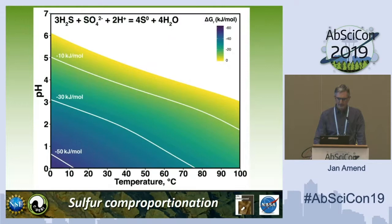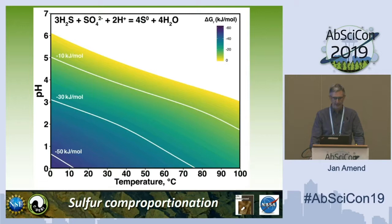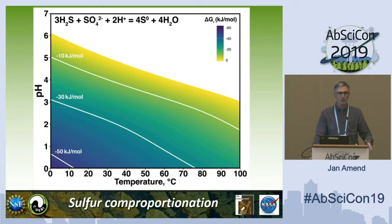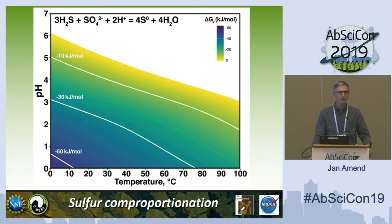Especially at low temperature — in the 0 to 50 degree range. This is the same reaction plotted slightly differently, with pH on the y-axis from 0 to 7, temperature up to 100 degrees, and color-coded: dark blue is minus 50 kilojoules, greens are minus 30, yellows minus 10, and the yellow-to-white transition is equilibrium. In the acidic range — pH 1, 2, 3 — there are certainly plenty of acidophiles that can handle that. In environments with high sulfide and high sulfate, this would be an energy-yielding reaction, with energy yields of 30 to 50 kilojoules per mole. We heard this morning that about 10 kilojoules per mole is often a cutoff, so this is certainly reasonable.